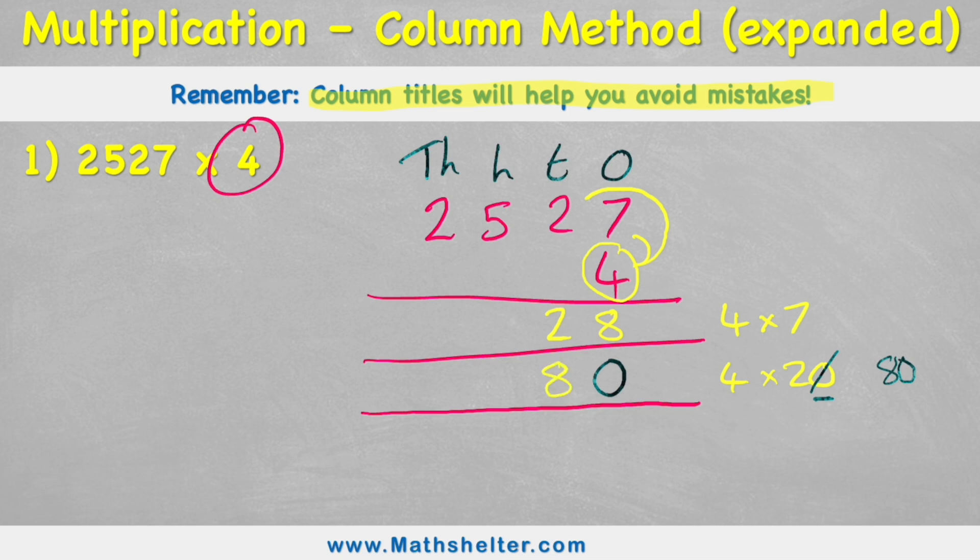Now what's my next question? Well, I've done 4 times 7. I've done 4 times 20. I now need to do 4 times 500. Because remember this 5 is actually in the 100s column. So it's 500. So my next row is 4 times 500.